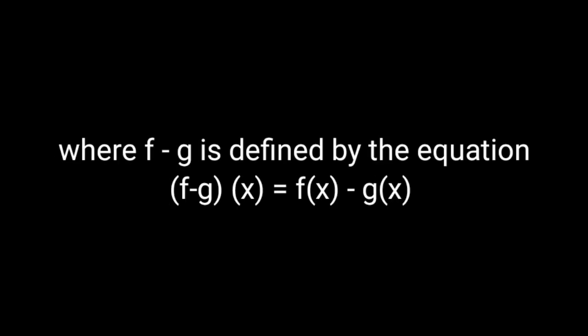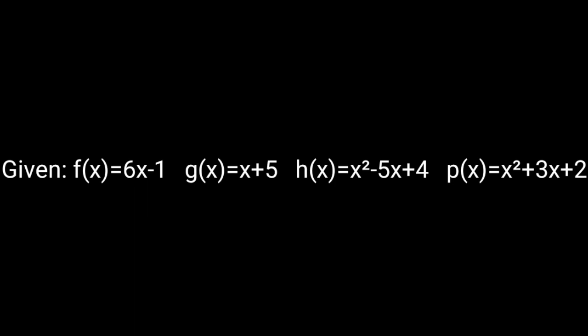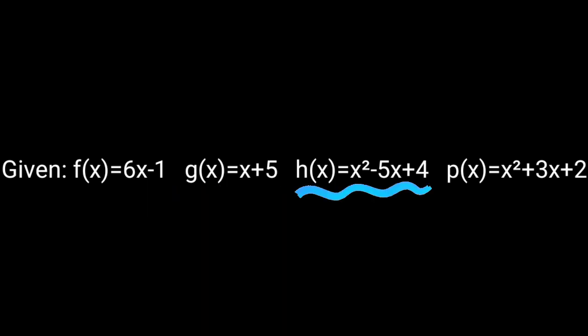The second operation on functions is the difference of two functions, where f minus g is defined by the equation (f − g)(x) = f(x) − g(x). Given f(x) = 6x − 1, g(x) = x + 5, h(x) = x² − 5x + 4, and p(x) = x² + 3x + 2.